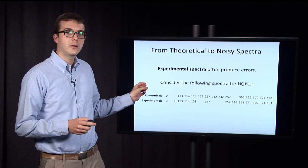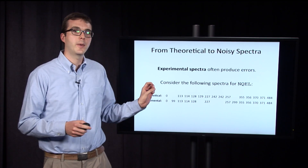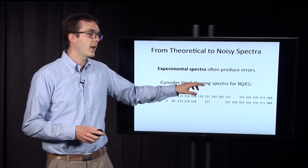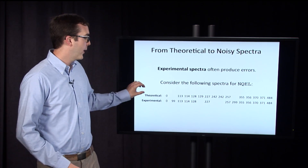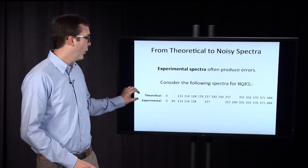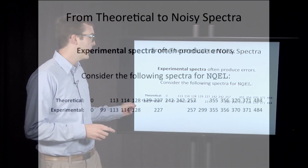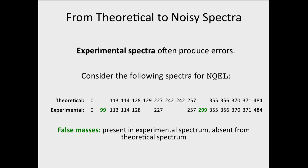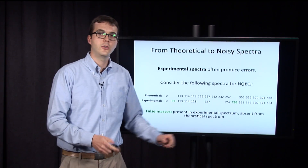Here are a theoretical and an experimental spectrum for the peptide NQEL. The theoretical spectrum is on the top, and then we're giving you a hypothetical experimental spectrum for this same peptide. This experimental spectrum highlights a couple of different ways that the experimental spectrum can be flawed. It can detect false masses — masses that are present in the experimental spectrum but don't correspond to real masses in the theoretical spectrum. Examples are 99 and 299 here.